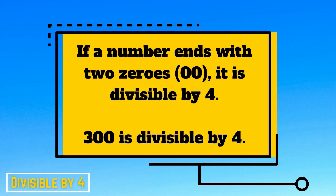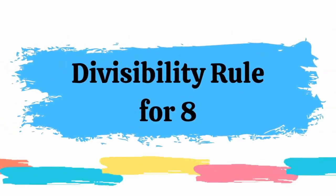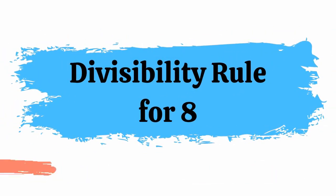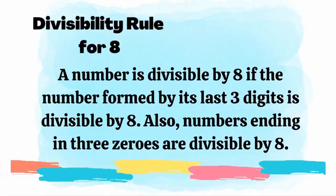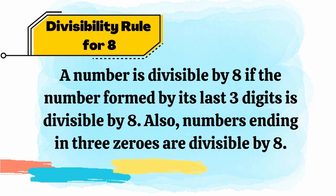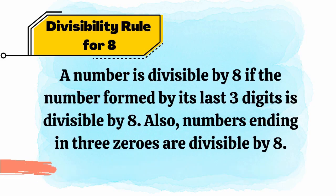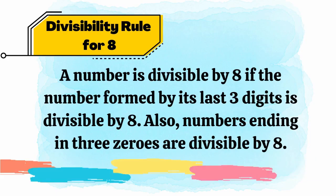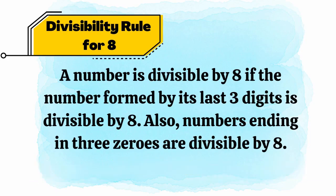Let's proceed to the Divisibility Rule for 8. A number is divisible by 8 if the number formed by its last three digits is divisible by 8. Also, numbers ending in three zeros are divisible by 8.